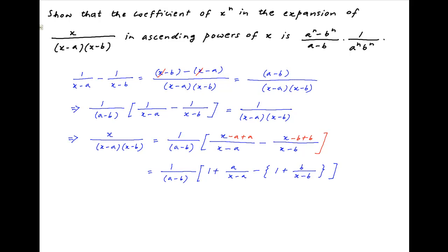The 1s cancel inside the square brackets, and therefore the expression simplifies to 1 upon (a minus b) times the quantity [a upon (x minus a) minus b upon (x minus b)].